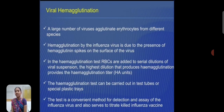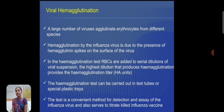Viral hemagglutination. A large number of viruses agglutinate erythrocytes from different species. Hemagglutination by the influenza virus is due to the presence of the hemagglutinin spike on the surface of the virus. In the hemagglutination test, RBCs are added to a serial dilution of the viral suspension. The highest dilution to produce hemagglutination is the hemagglutination titer. The test can be carried out as either a tube test or plastic tray test, and is a convenient method to detect and assay influenza virus and also to survey the efficacy of influenza vaccine.